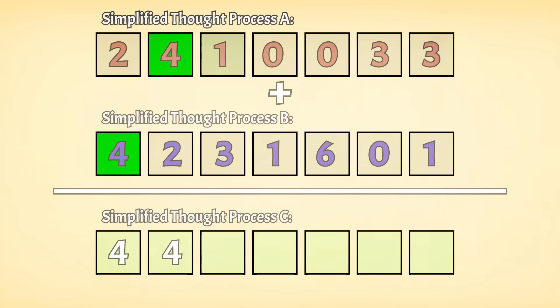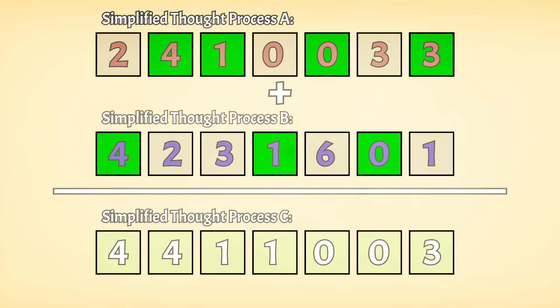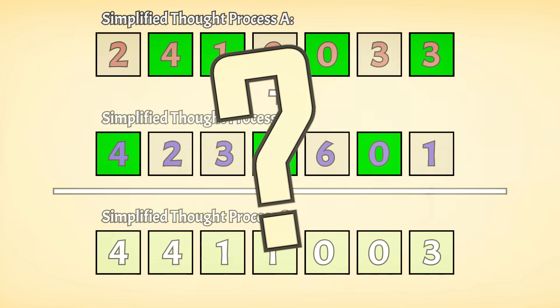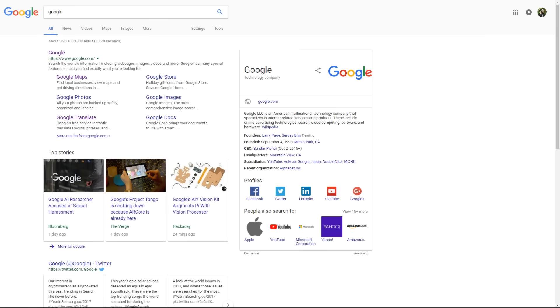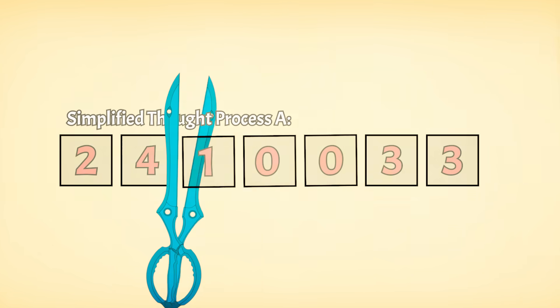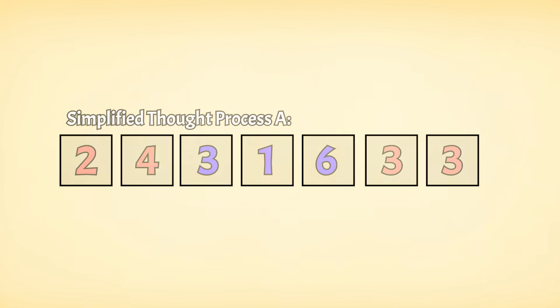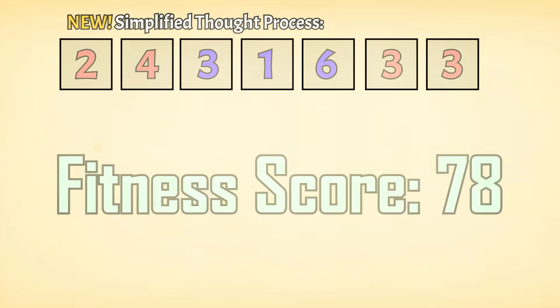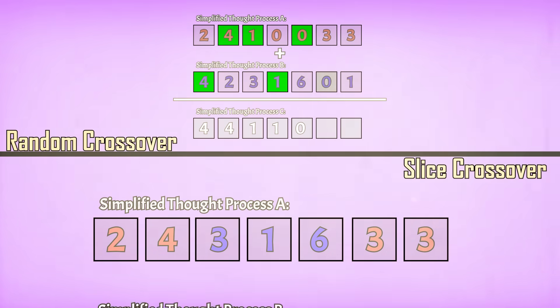We have two different crossover functions to choose from, and which one will be better to train Forrest with is unknown — we'll test for this a little later. A new thought process could increase, decrease, or do almost nothing to performance. It's just the nature of what we're dealing with.